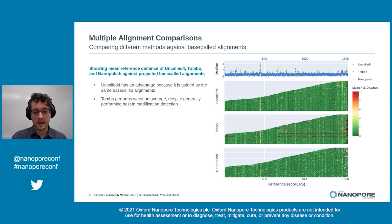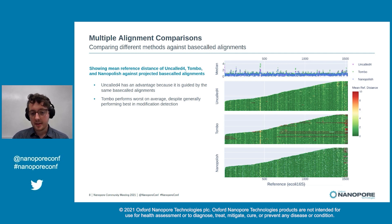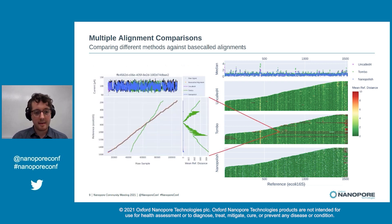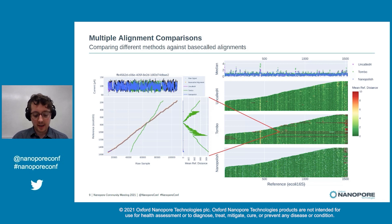Uncalled seems to be closer on average than the other methods, though we have an advantage because we're guided by those same base-called alignments. We see in red stripes on Tombo that a few reads seem to be quite wrong compared to the base-called alignments. Looking closer, Nanopolish and Uncalled both agree quite closely with the base-called alignment where Tombo is far off. Interestingly, Tombo tends to perform much better for modification detection than our method or Nanopolish, so it seems on a base-to-base basis Tombo is getting a better refinement, but some reads clearly have room for improvement.